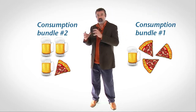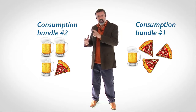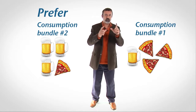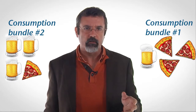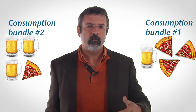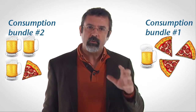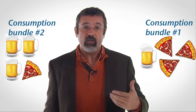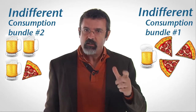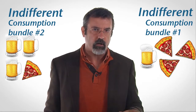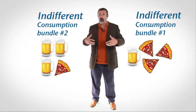If you choose the second consumption bundle — three beers and one slice of pizza — you are said to prefer the second consumption bundle to the first. Suppose both consumption bundles seem equally good to you. If you believe that both consumption bundles are equally good, economists say that you are indifferent between the bundles. Indifferent doesn't mean that you don't care about the products — it means that the two bundles give you the same amount of happiness.